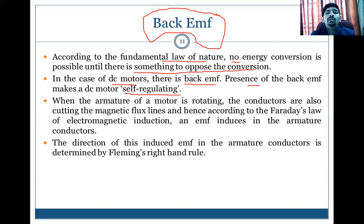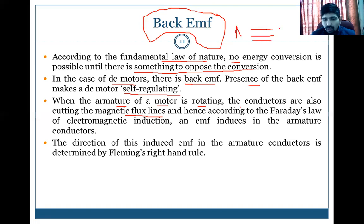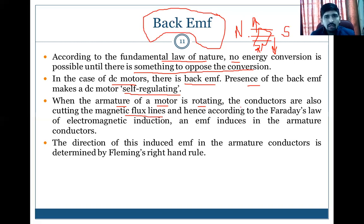When the armature of a motor — which is the rotating part — rotates, the conductors are also cutting the magnetic flux lines. Imagine magnetic flux lines between the north and south sides of the stator, with the armature placed in the middle. When current passes through the armature, a force is produced, causing it to start rotating. Whenever a current-carrying conductor cuts the magnetic flux, an EMF is induced in it.